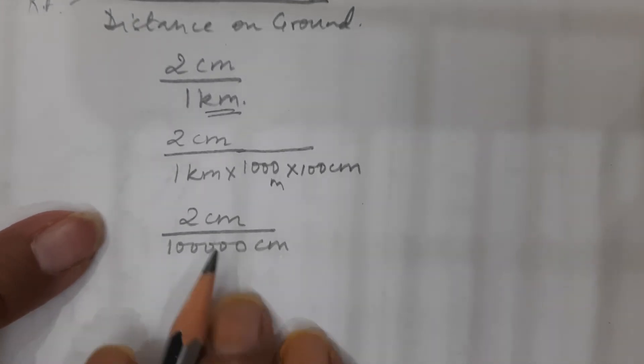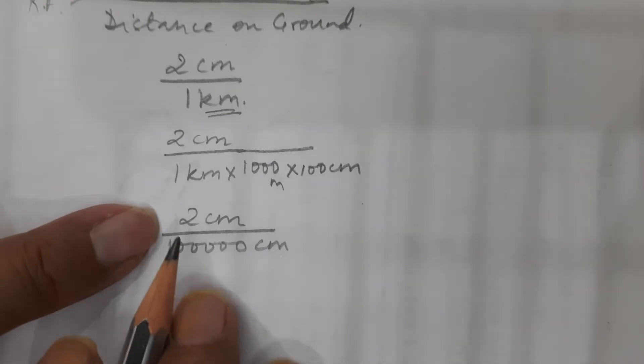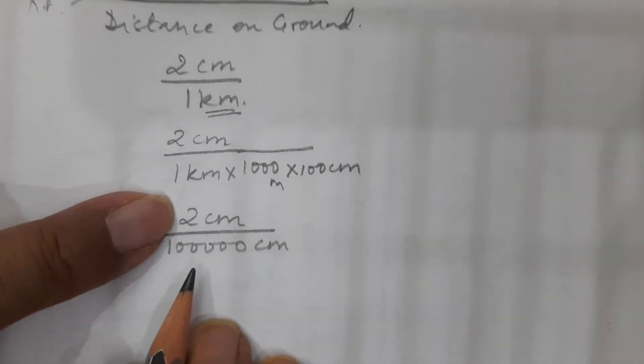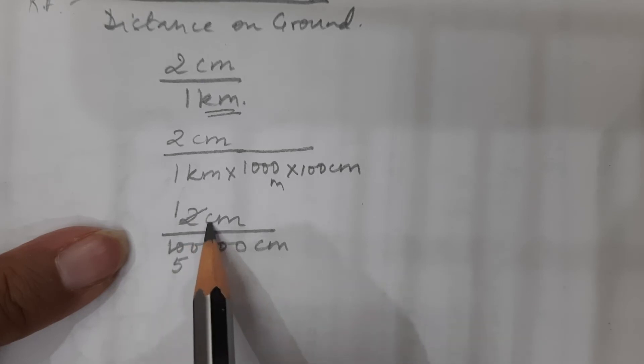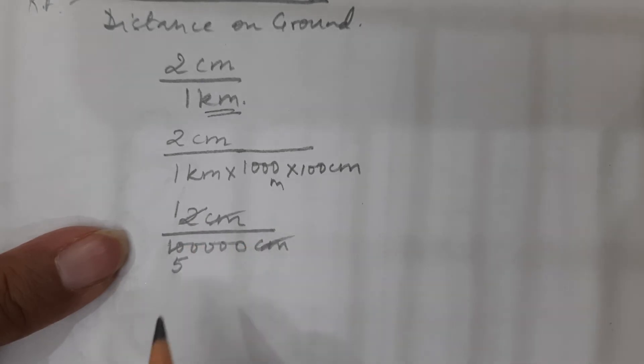Now once I have got the two units, sorry the two numbers that is the numerator and the denominator both in the same unit, I am going to reduce it because I can reduce it. So I will cancel this to 1 and 10 will become 5 and obviously now I am also going to eliminate the unit and therefore I get 1 upon 50,000 or I can say RF. I can also write it as 1 is to 50,000.